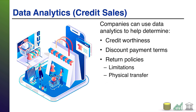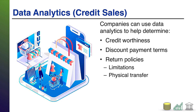Last up: return policies. I have this broken up into two pieces — the first being limitations, the second being physical transfer. Limitations refers to whether you need to restrict certain brands from being returned, or restrict returns to a certain number of days, a certain level of damage, and so on. Your data analytics can help flesh this out because you can look at your return history, see where the trends in returned items are, and see where you're losing the most money. That's where you should focus your return aversion efforts. Limitations on the customer's ability to return — or enticements not to return — can be fleshed out with your data analytics.